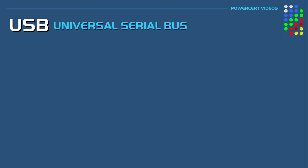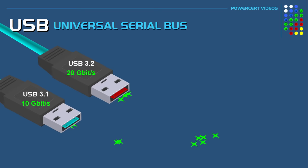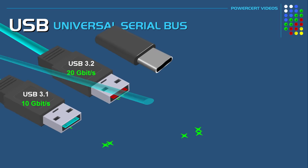Subsequent releases of USB 3.0 followed, such as USB 3.1, which was released in 2013, also known as Super Speed Plus. USB 3.1 had a transfer rate of 10 gigabits per second, which is double that of USB 3.0. Then USB 3.2 was released, with a transfer rate of 20 gigabits per second. And in 2019, USB 4.0 was announced, with a transfer rate of 40 gigabits per second.